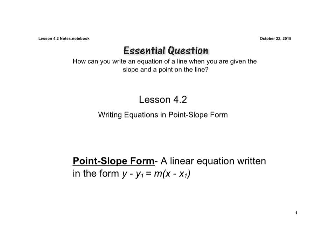Now remember, in 4.1 we were able to write the equation of a line in slope-intercept form when we found the slope, but then we were given the y-intercept. Now we're just going to be given a point on the line. So to help us do this, we're going to be using this point-slope form.